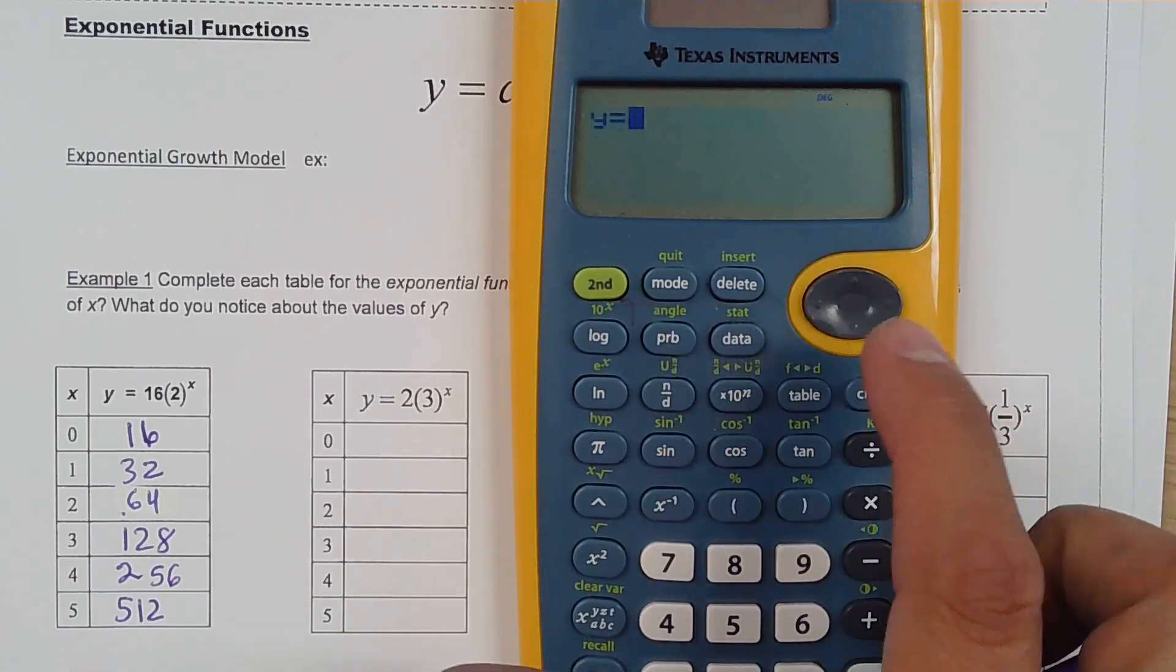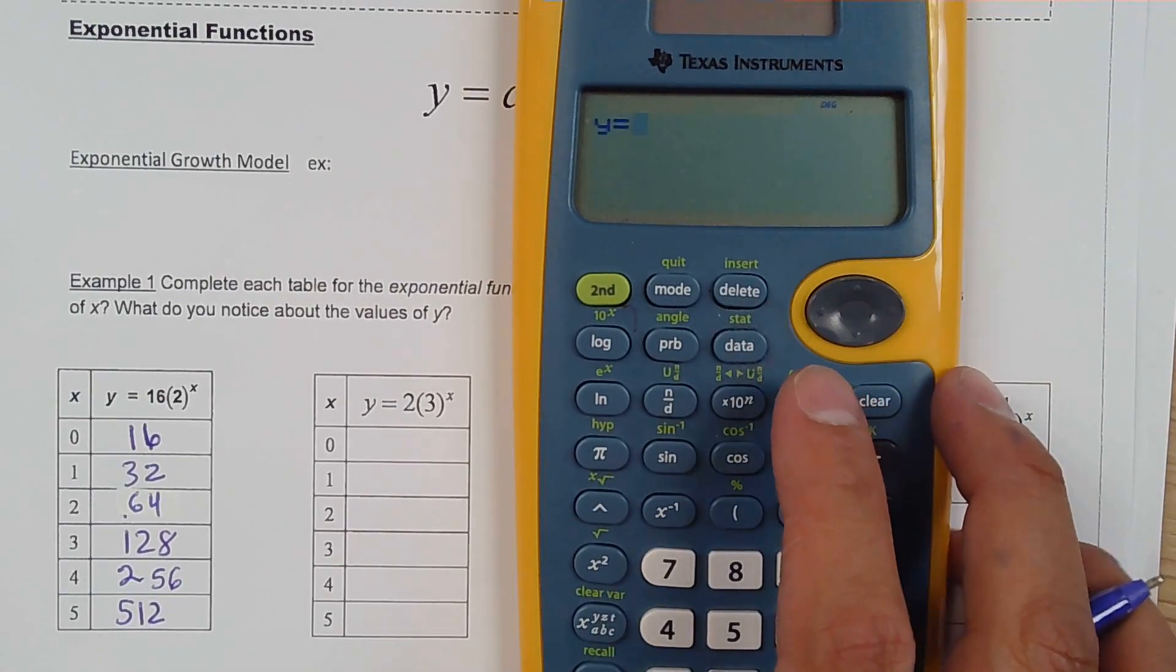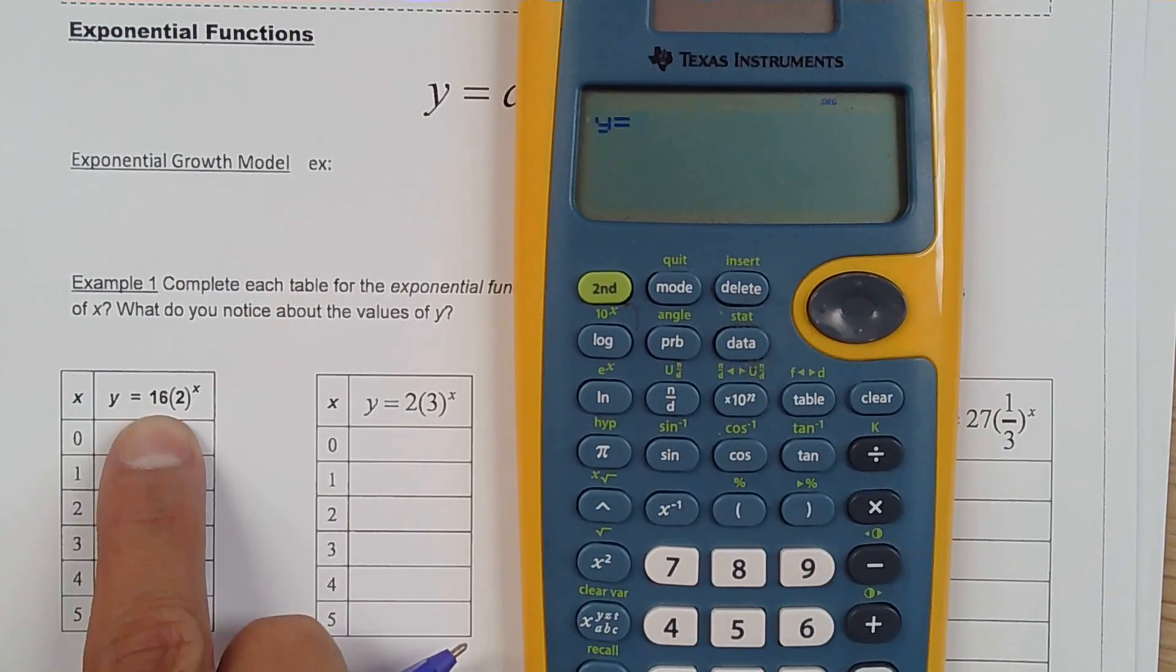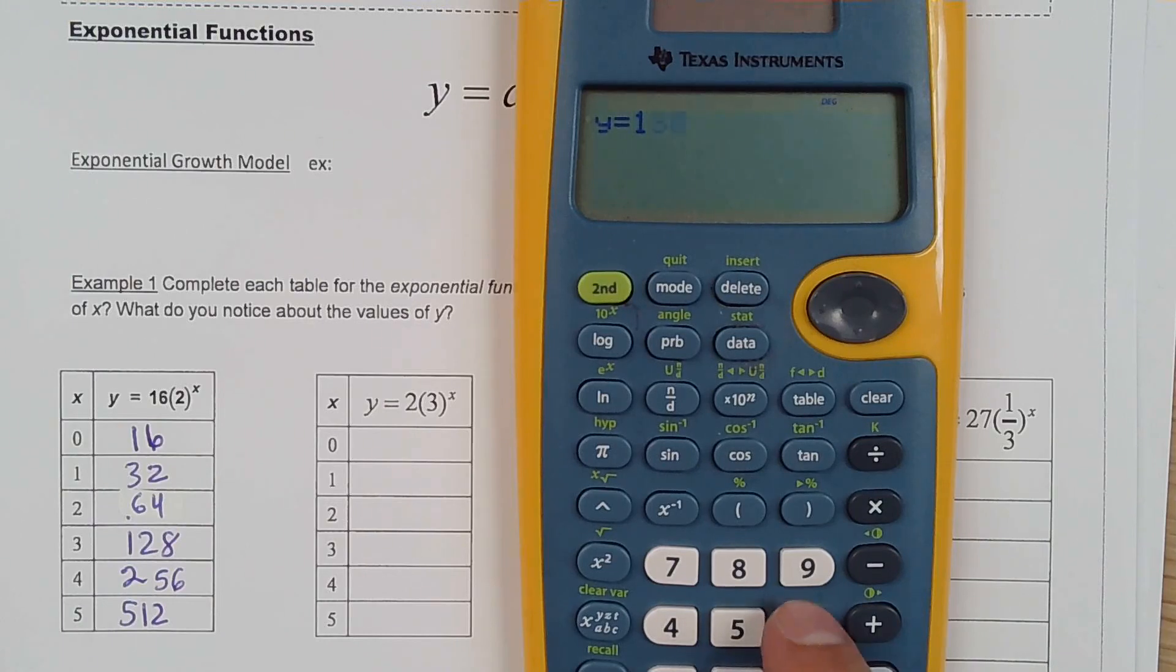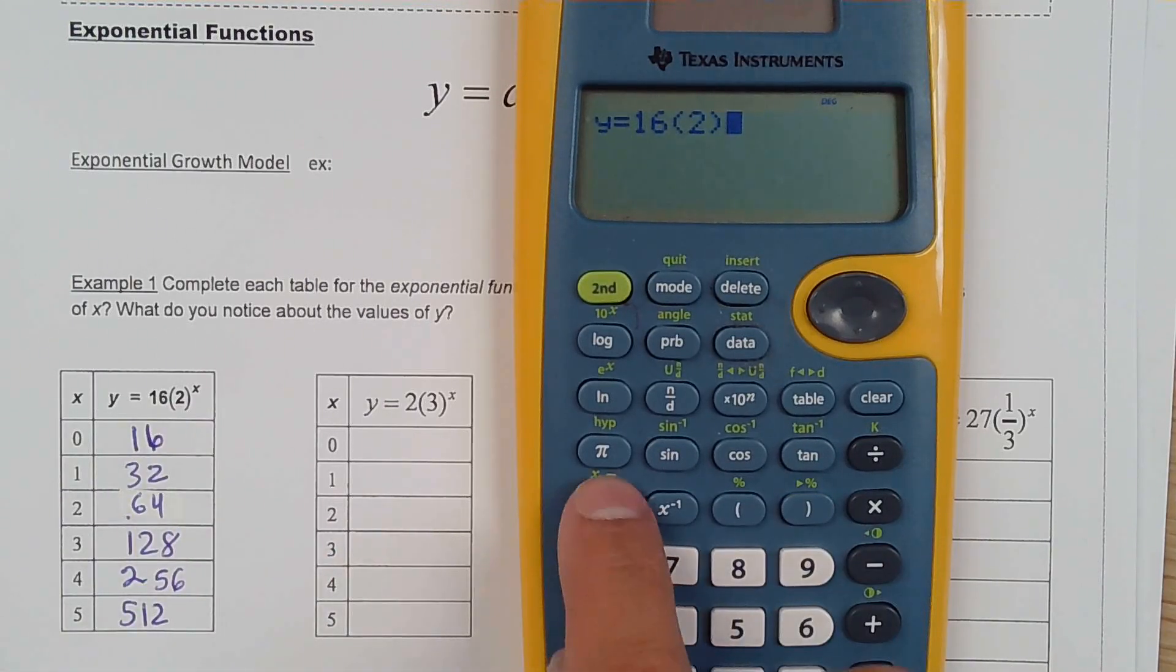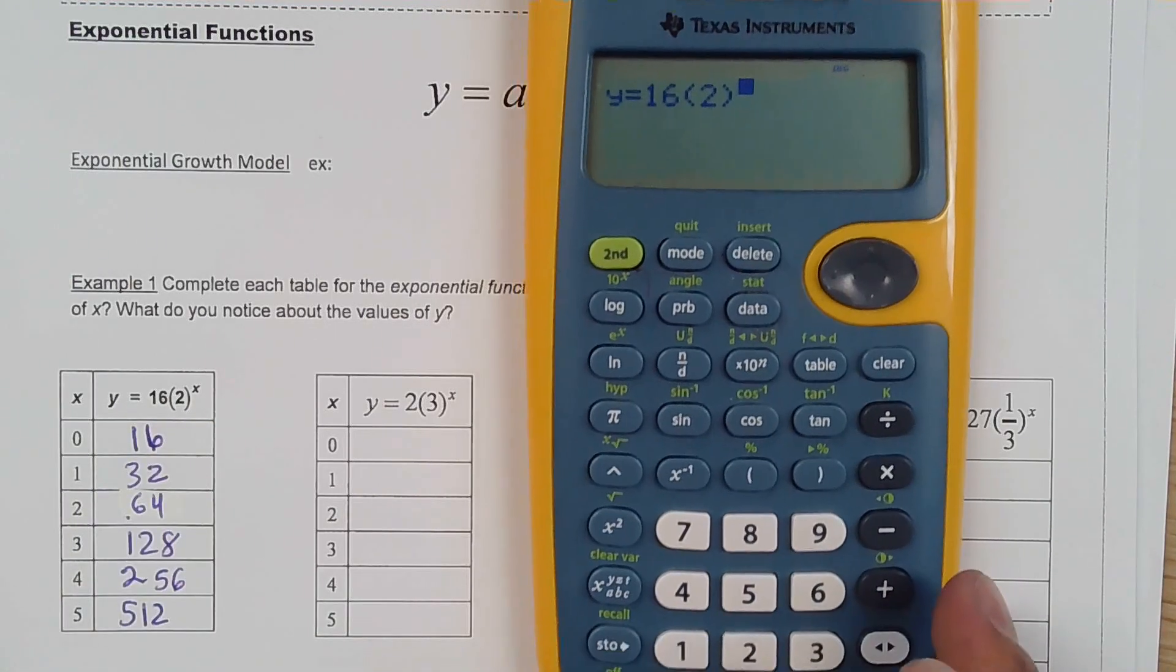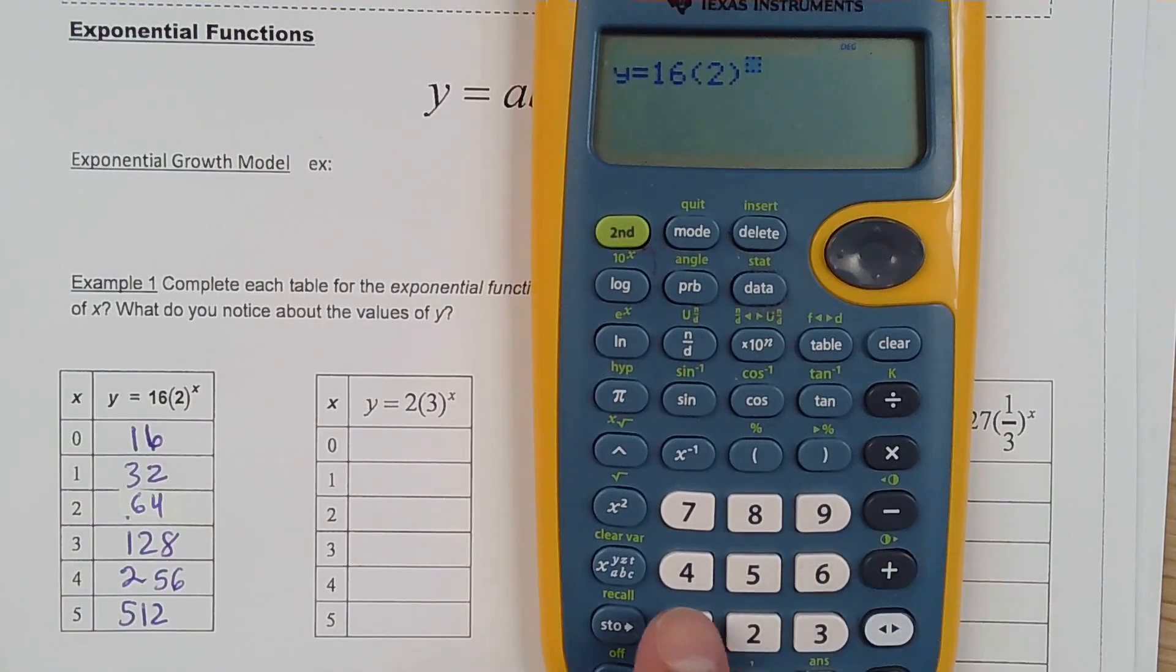Alright so we're going to put table, you're going to clear that out and now you're going to input the function. So the function is 16 parentheses 2 and you're going to raise it to the power of x. How do you do that in this calculator? This calculator is actually good enough to do that.